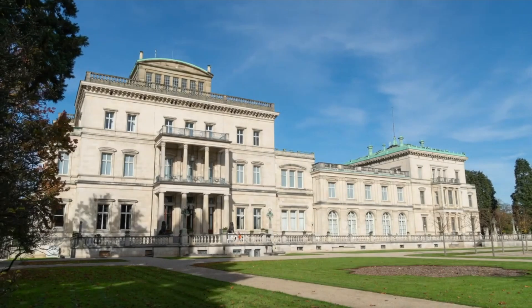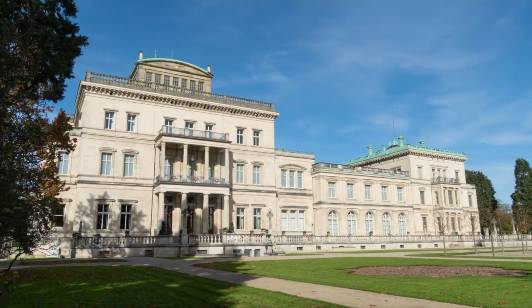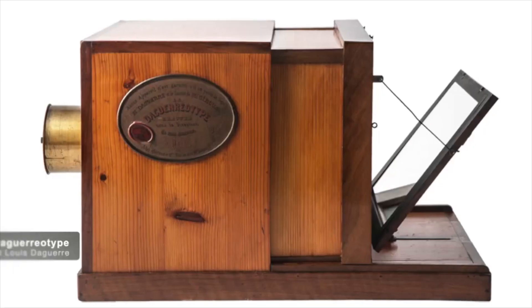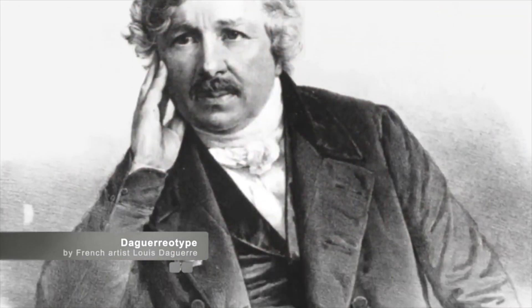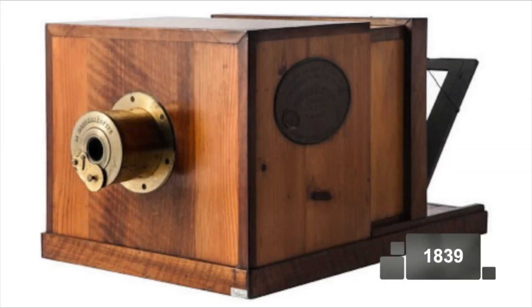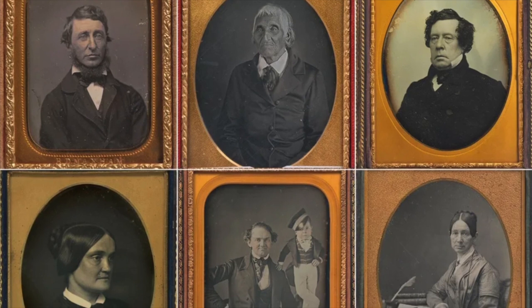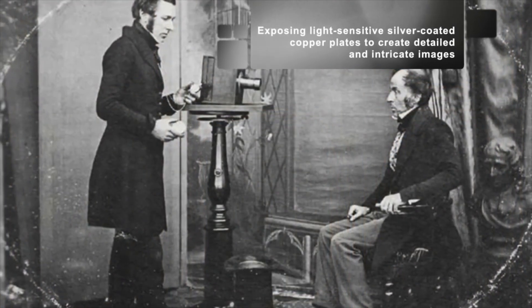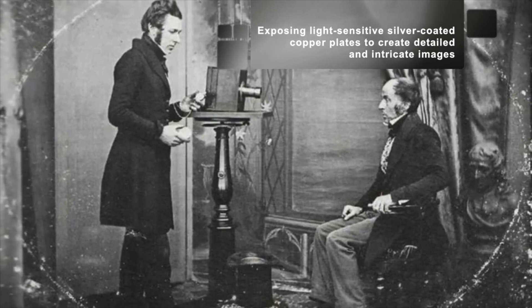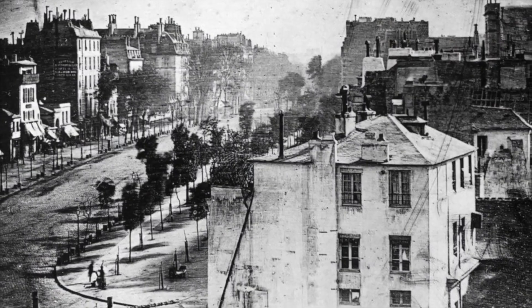The true birth of photography as we know it today occurred in the 19th century with the invention of the daguerreotype by French artist Louis Daguerre. Introduced to the world in 1839, the daguerreotype marked a revolutionary moment in visual history. This groundbreaking technique relied on exposing light-sensitive silver-coated copper plates to create detailed and intricate images, capturing the interplay of light and shadow with unprecedented precision and clarity.